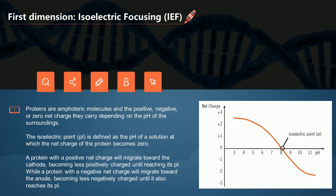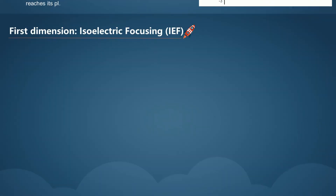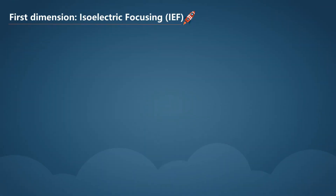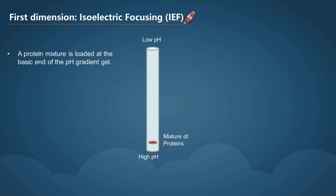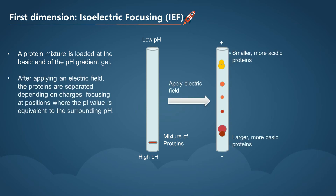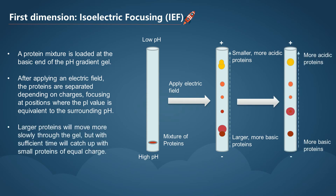As for the specific process, a protein mixture is loaded at the basic end of the pH gradient gel. After applying an electric field, the proteins are separated depending on charges, focusing at positions where the isoelectric point value is equivalent to the surrounding pH. Larger proteins will move more slowly through the gel, but with sufficient time will catch up with small proteins of equal charge.